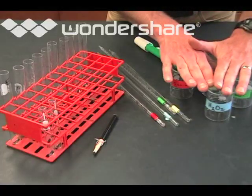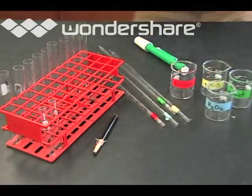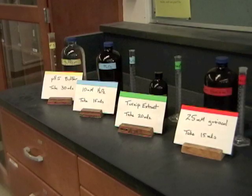Next we have to go and get the reagents that you'll be using for this. So these are all the reagents that you need to do the enzyme lab. There's the glycol, the turnip extract that has the enzyme, the hydrogen peroxide, and then a pH 5 buffer.